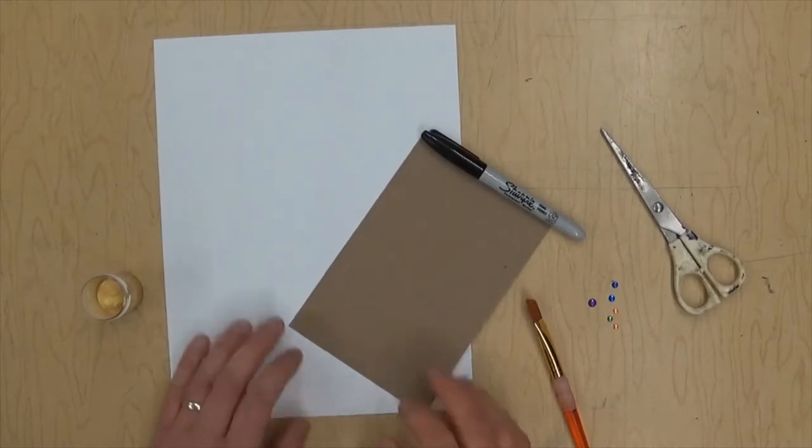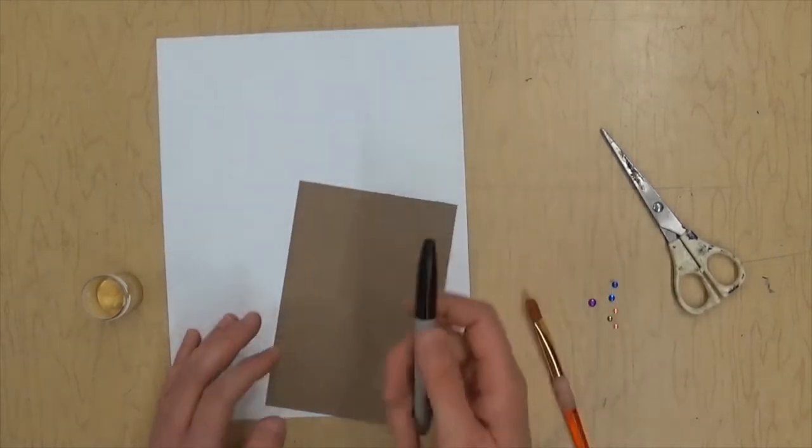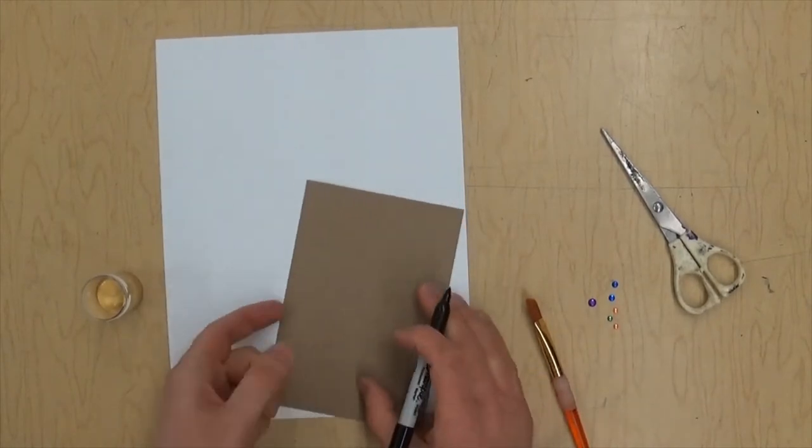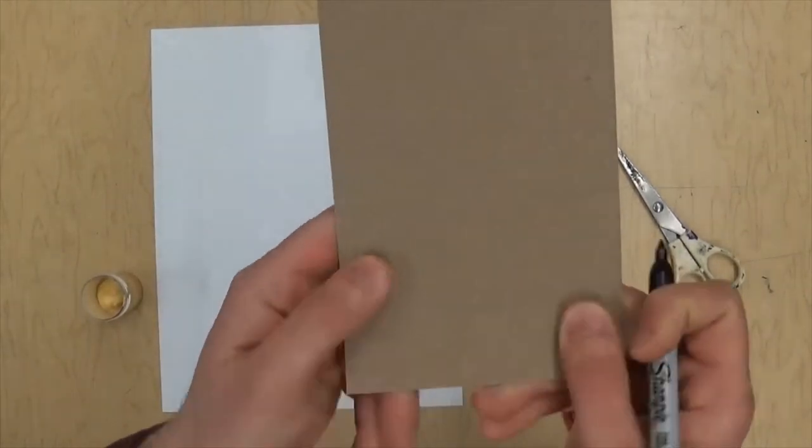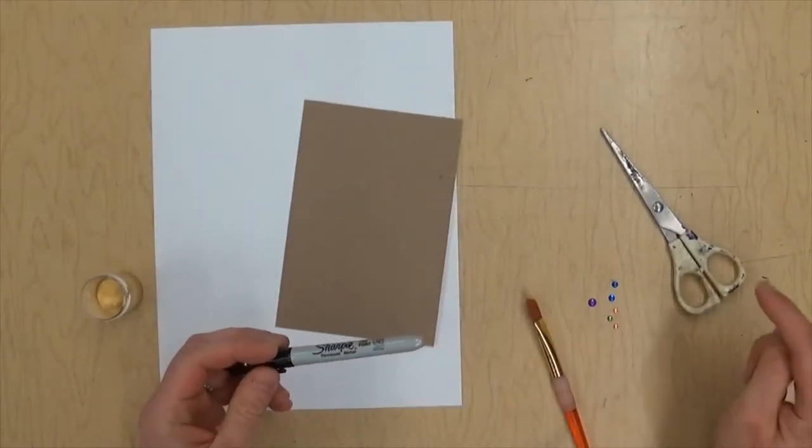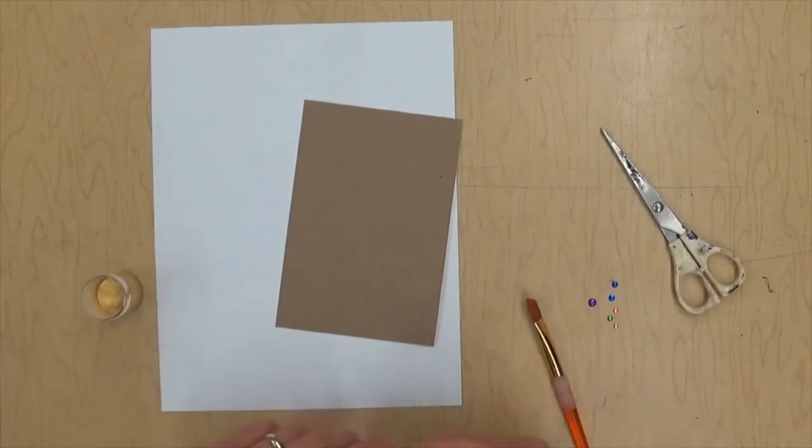In ancient Egypt, these weren't just like a box—well, sometimes they were—but we're going to do one that's a little bit fancier, kind of like King Tut's. This is just cardboard that's easy to cut. I also have a Sharpie, a paintbrush, scissors, gold paint, and some stick-on jewels.